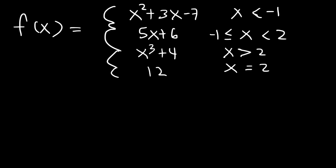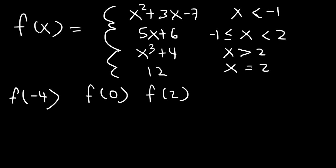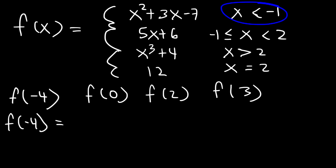With this information, evaluate f of negative 4, f of 0, f of 2, and f of 3. Feel free to pause the video and try that. So let's evaluate the function at x equals negative 4. Negative 4 is less than negative 1, so we need to use x squared plus 3x minus 7.